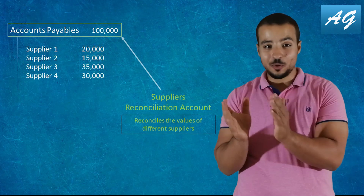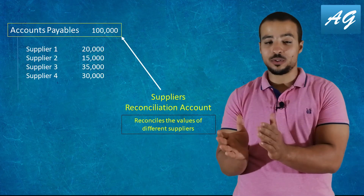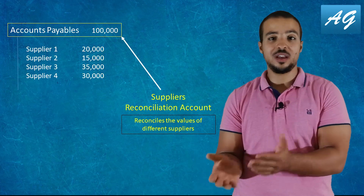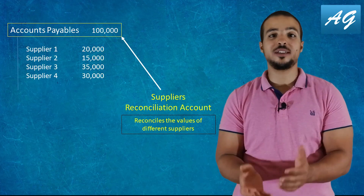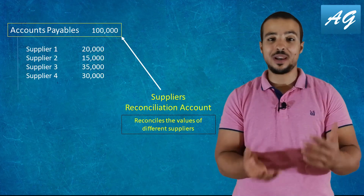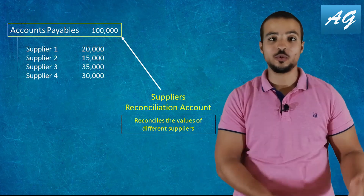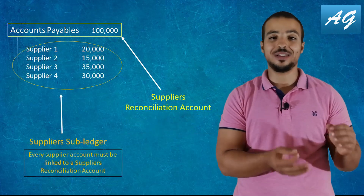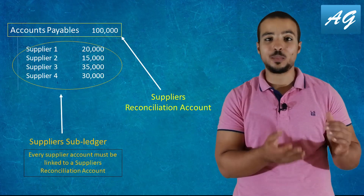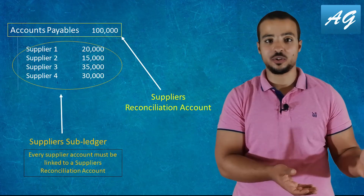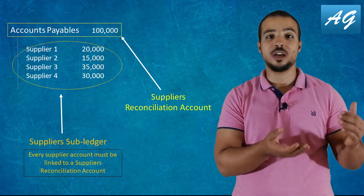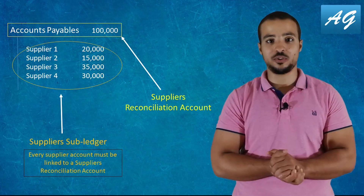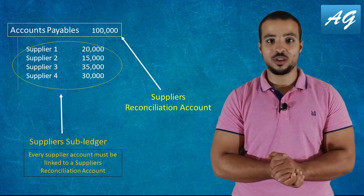The accounts payable account is a reconciliation account because it reconciles the total balances of all the vendors we have. The vendors are called the accounts payable sub ledger, because they are all considered parts of the accounts payable reconciliation account.